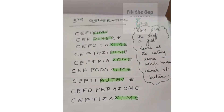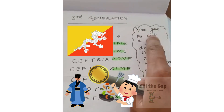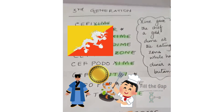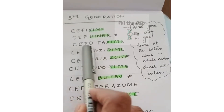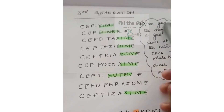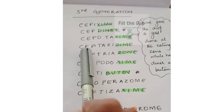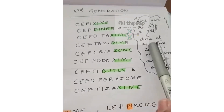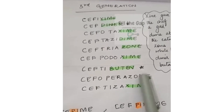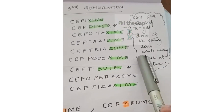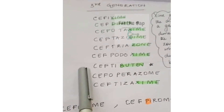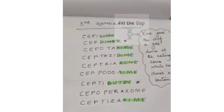The mnemonic for third generation is: 'Zyme gave the chef a gold dime at the eating zone while having dinner at Bhutan.' Zyme helps you remember cefixime, ceftoxime, cefpodoxime, ceftoxime. Dime helps you remember ceftazidime. Zone helps you remember ceftriaxone and cefoperazone. Dinner gives you cefdinir. Bhutan gives you ceftibuten. So third generation is done.